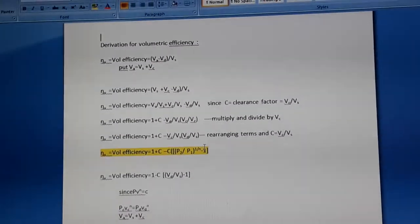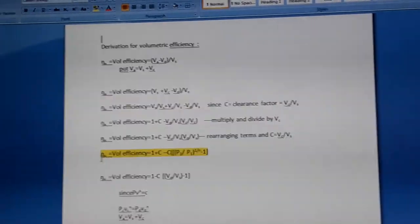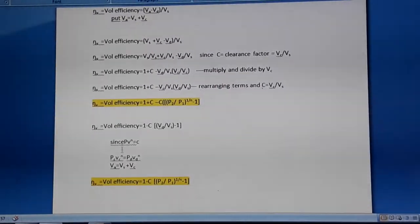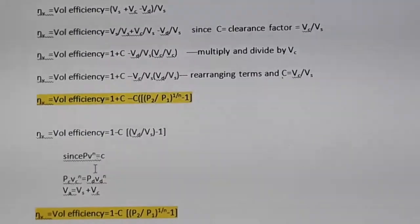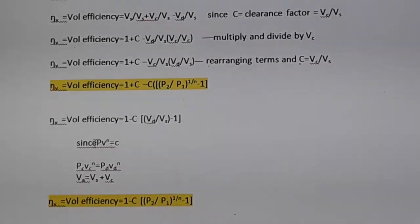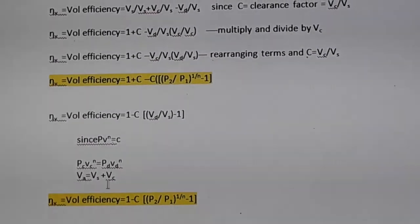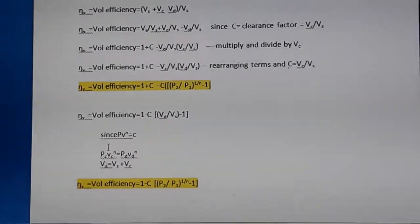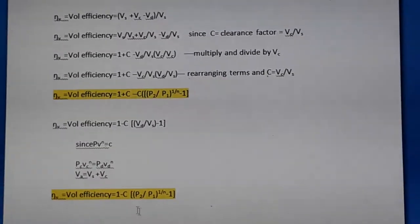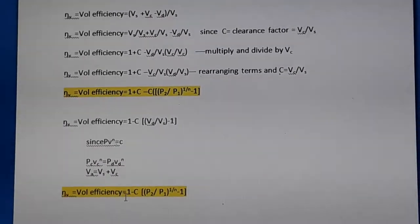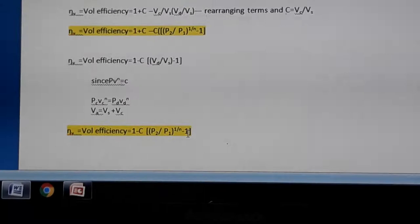The same expression can be rewritten using the polytropic process relation pV^n = constant. For states c and d we write p_c · V_c^n = p_d · V_d^n. Taking c common in the numerator and rearranging, the modified expression for volumetric efficiency becomes η_v = 1 − c · [(p2/p1)^(1/n) − 1], which is equivalent to the previous form.